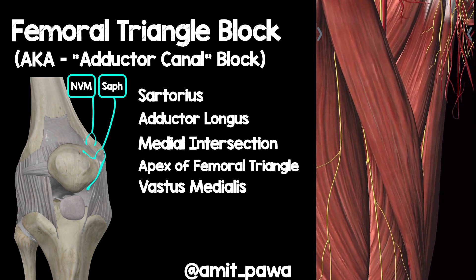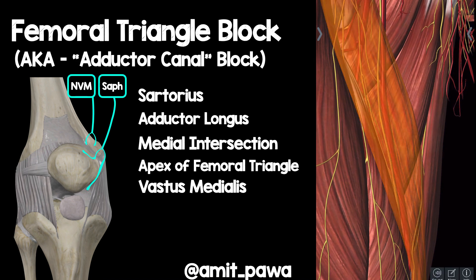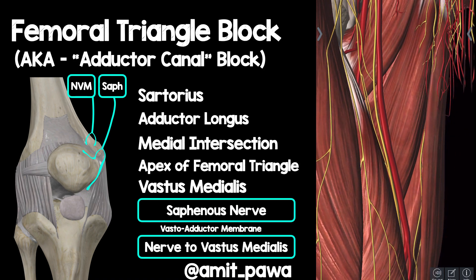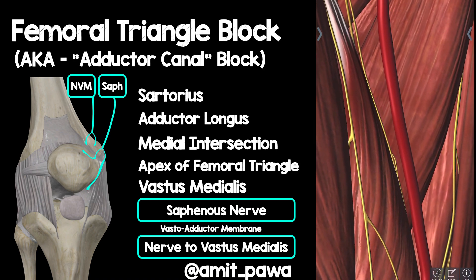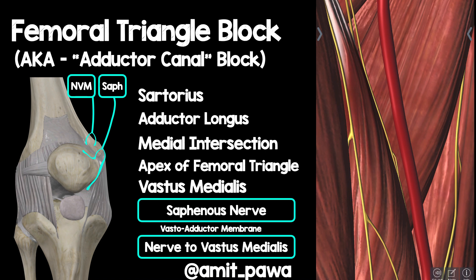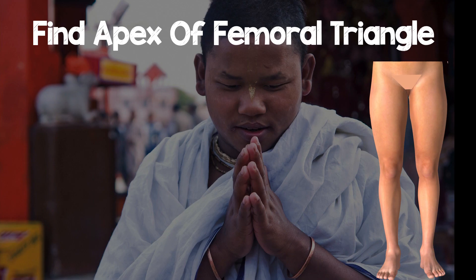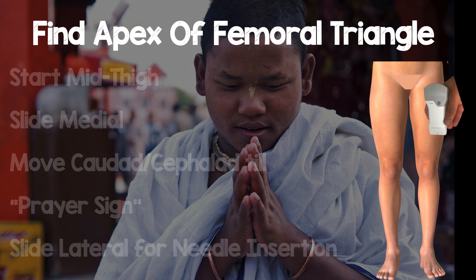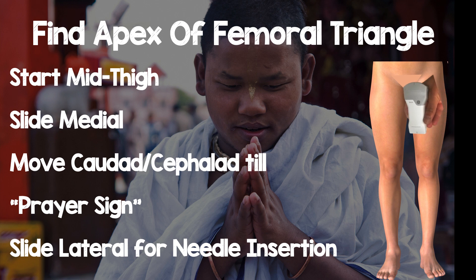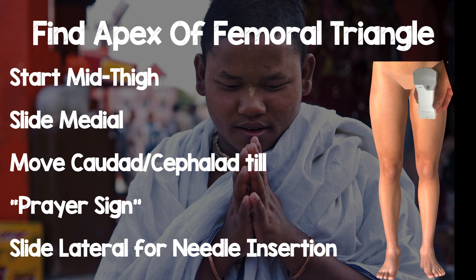Let's look in more detail. We highlight the sartorius muscle, and as we remove it we expose the superficial femoral artery, the saphenous nerve, and the vastus medialis muscle. The nerve to vastus medialis lies on the surface of the muscle, separated by the vastoadductor membrane. To find the apex of the femoral triangle, we place the probe on the mid-thigh and slide medially, then move cephalad until we identify the prayer sign. Once identified, we slide lateral for needle insertion. The prayer sign indicates the apex of the femoral triangle.